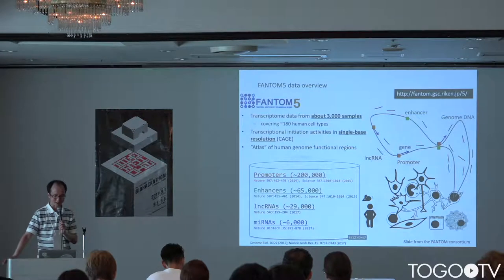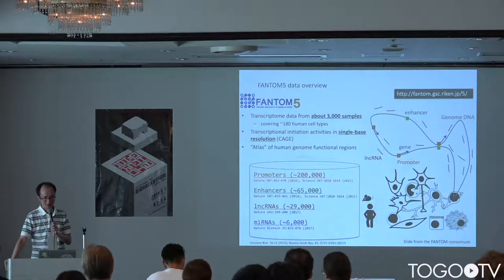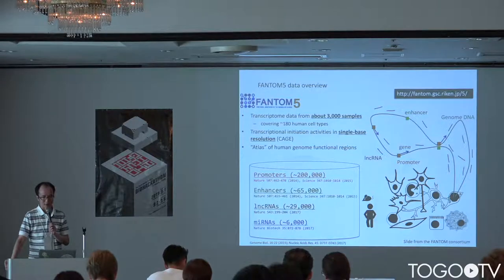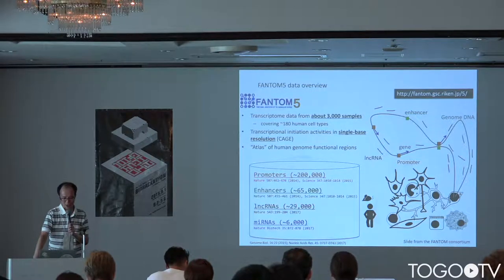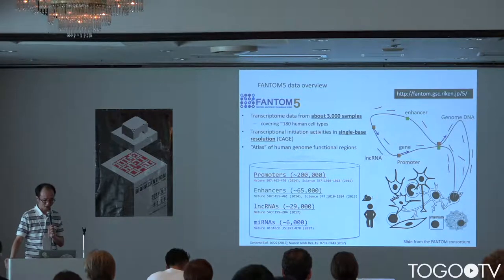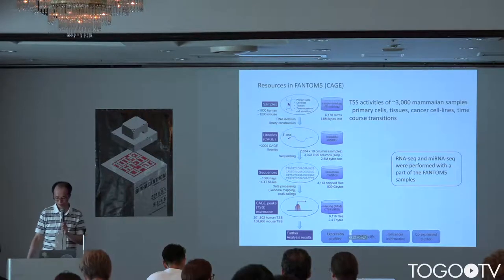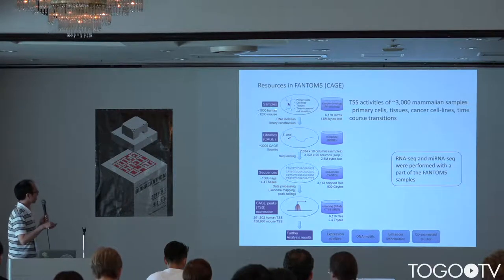I'd like to explain the FANTOM5 project. FANTOM5 targets about 3,000 samples in human and mouse, and we measured transcription start site (TSS) activities for these samples. We also performed miRNA sequencing and RNA-seq using these 3,000 samples. We constructed an atlas of human genome functional regions, including 200,000 promoters, 65,000 enhancers, 29 long non-coding RNAs, and 6,000 microRNAs with their activities.